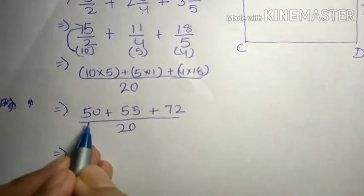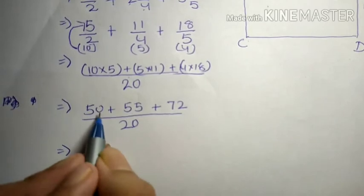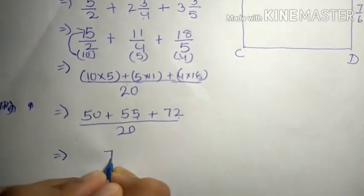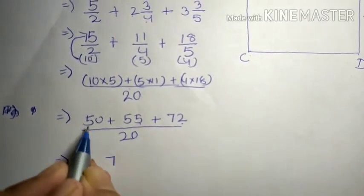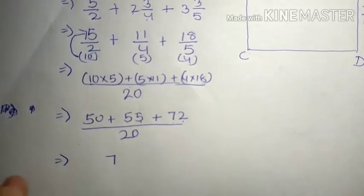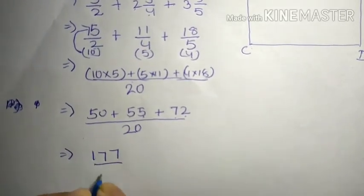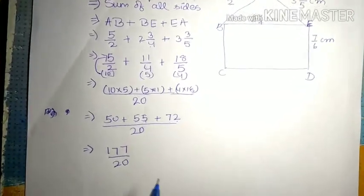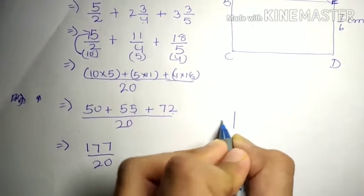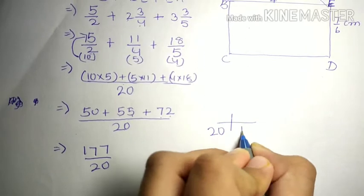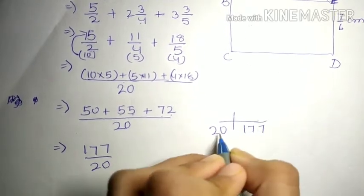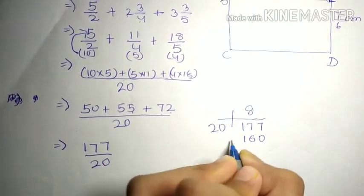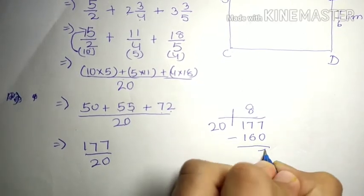Now let's add these numerators: 50 + 55 + 72. Adding the units: 0 + 5 + 2 = 7. Then the tens: 5 + 5 = 10, plus 7 gives 17. So we get 177/20. Now we will convert this improper fraction into a mixed fraction by dividing: 20 goes into 177 eight times, giving 160.